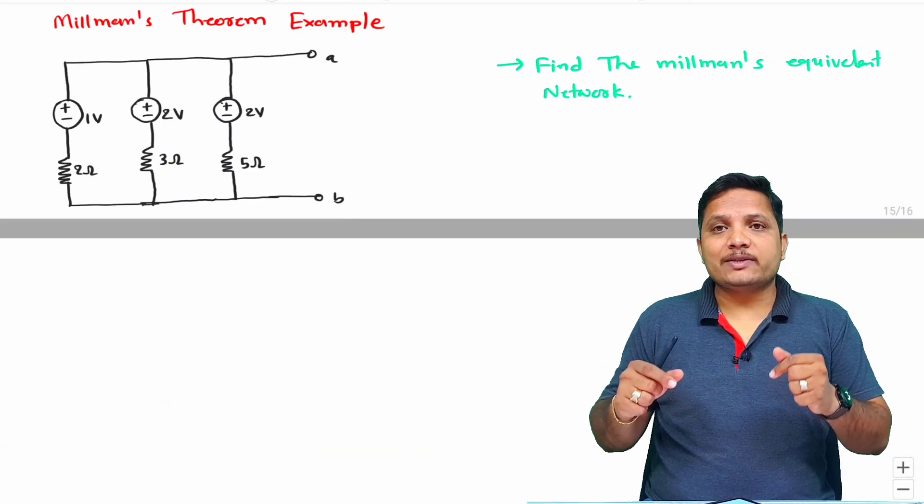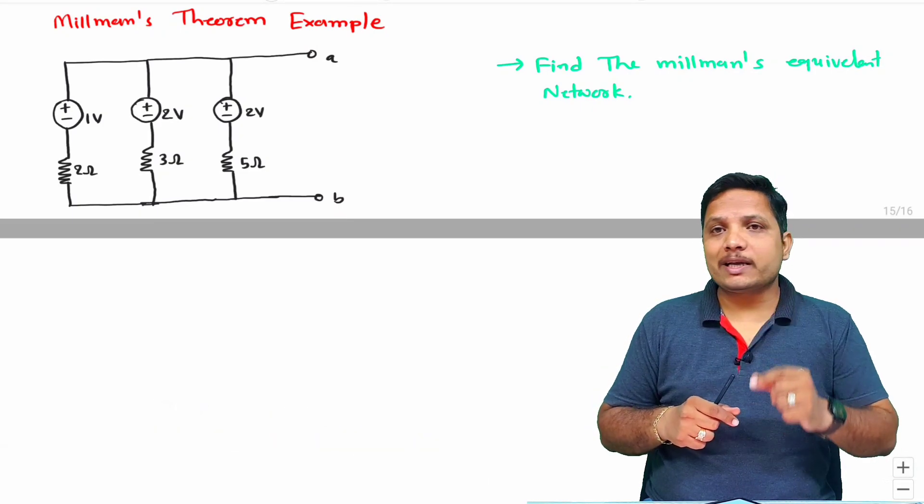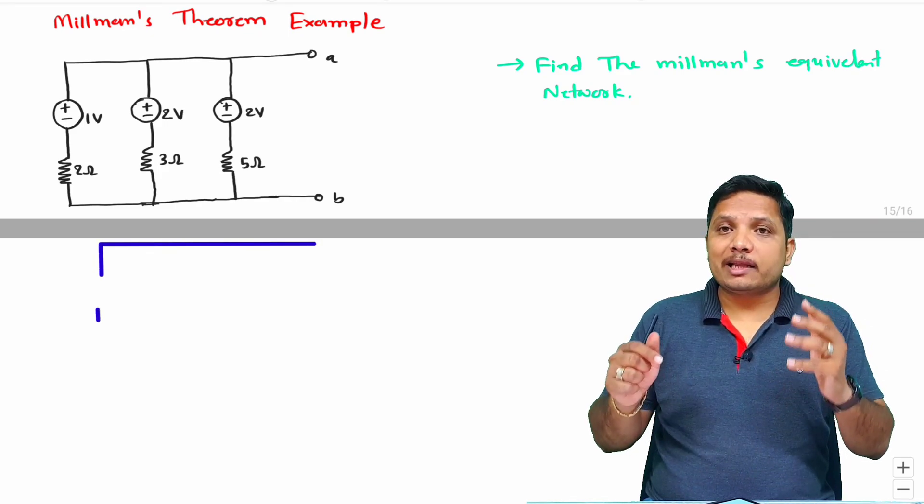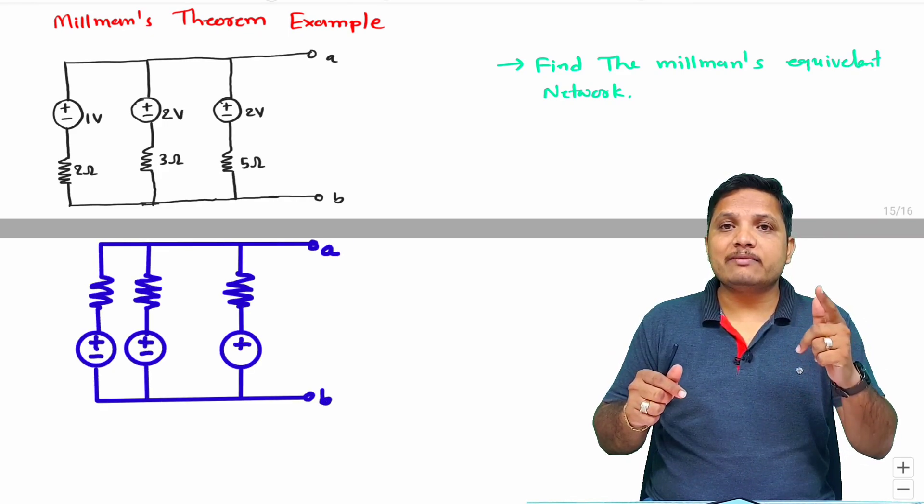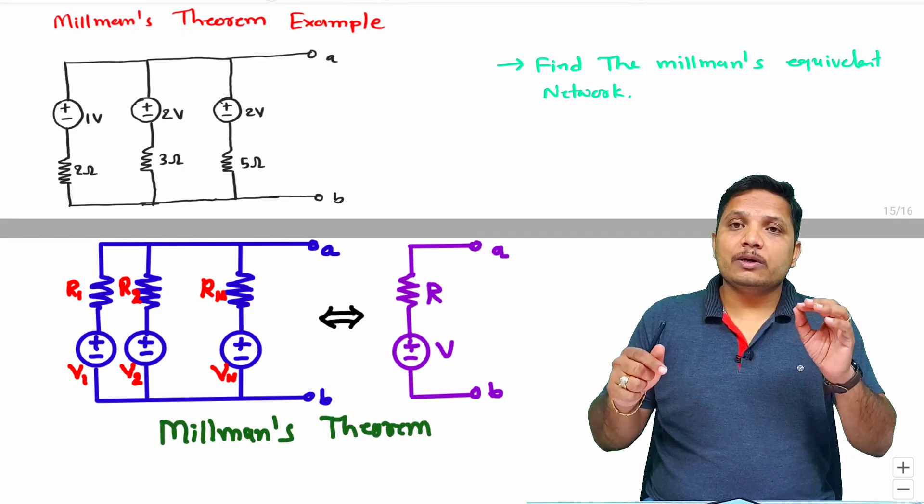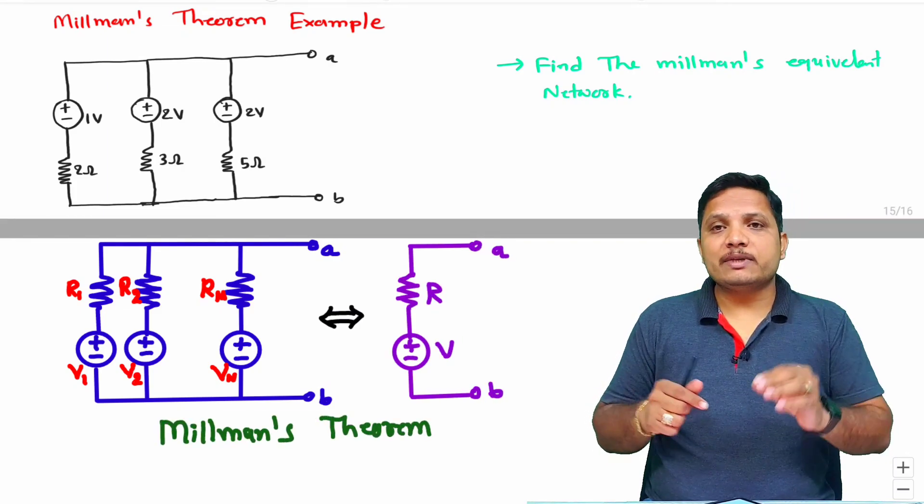Before I solve this problem, one should know what is Millman's theorem. If you have parallel combination of resistance and voltage source in series, then that is equivalent to voltage source in series with resistance.